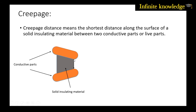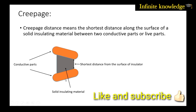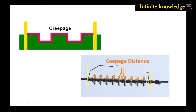The creepage is the shortest distance along the surface of the solid insulating material between the two conductive parts. In this figure, the green line represents the insulator and the two yellow lines are the conductive parts or live parts. The pink line represents the creepage path from the insulating surface. In another important figure, the path created between two conductive parts from the surface of the insulator is also called the creepage distance.